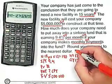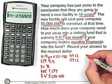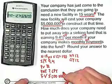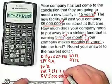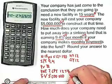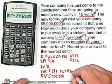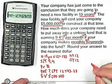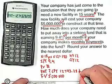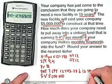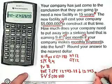The question says round your answer to the nearest dollar. My answer is $12,743.28, so we round this down and make it $12,743.